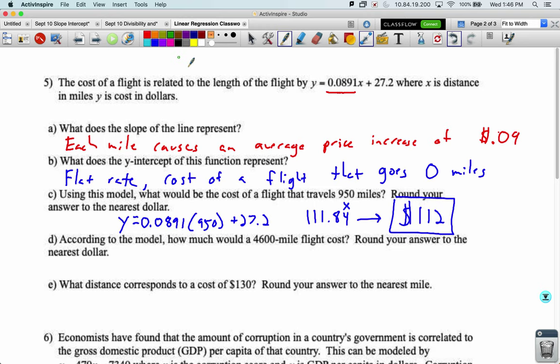How much would a 4,600 mile flight cost? So now we've got an x again, but now it's like way out there. Most likely in problem C, we were interpolating because we have data up to 950 miles. This is probably extrapolating because we probably don't have data all the way out to 4,600. We'd have to see the data to know that for sure. Let's plug it in. Y equals 0.0891 times 4,600 plus 27.2. 0.0891 times 46,000 plus 27.2. We get $437 if we round to the nearest dollar.